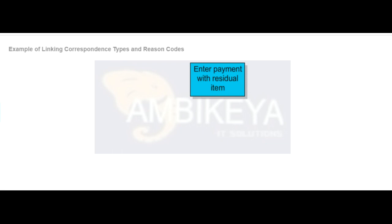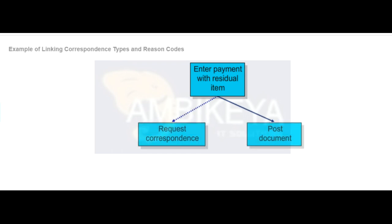Assume that the tolerance group correspondence is SAP 01 and your customer makes a partial payment after a delay of 2 months. When you manually process this incoming payment, you create a residual item with a reason code and request correspondence type SAP 01 payment notice.